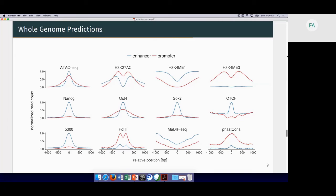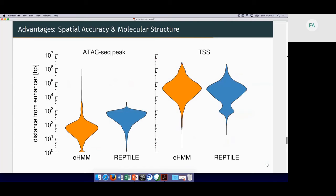This is my last data slide, which shows basically the advantage of the tool compared to existing methods. On the left side I show the distance distributions from predictions by eHMM or REPTILE to the next ATAC-seq peak. We can see that eHMM is very accurate. The distribution centers around 40 base pairs, and REPTILE has a median of about 300, so our predictions are much closer to what is actually the functional entity of a predicted enhancer.